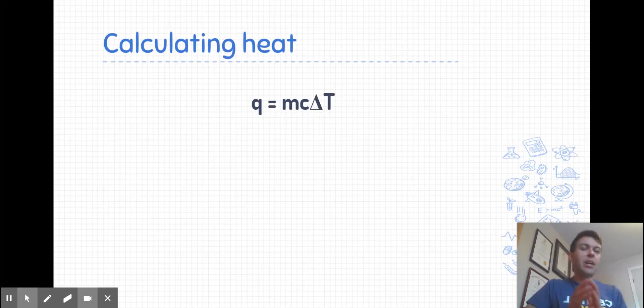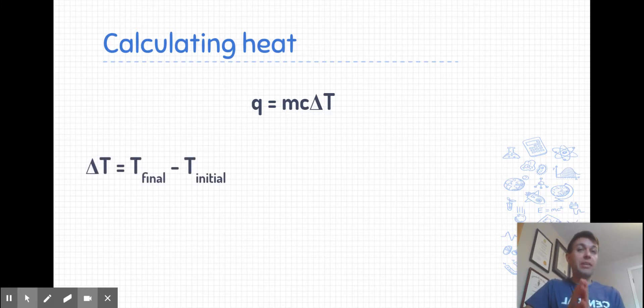Mathematically, the heat absorbed or lost by a substance is calculated using a very simple equation. Q equals mc delta t, where q is the amount of heat, often in joules, m is the mass, c is the specific heat capacity, and delta t is the temperature change, which is always calculated. The final temperature subtract the initial temperature. So if the temperature of a substance increases, you'll end up with a positive value for delta t, and if it decreases, we'll end up with a negative value. As a result, the sign on delta t will determine whether the q value is negative or positive, because the mass and specific heat capacity of a substance are always going to be positive.